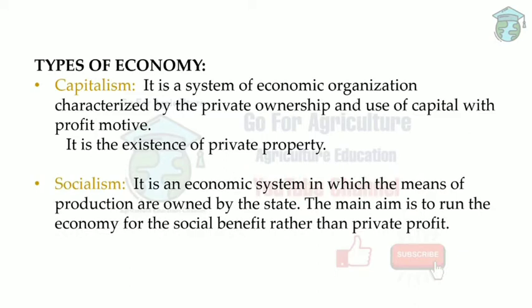Socialism means it is for the economic growth of the country. For example, many buildings and lands are owned by the government, and the government builds houses for the people to promote economic growth — many means of production are owned by the state. The main aim of socialism is to increase the economy of the country. Capitalism is for private profit, whereas socialism is for social benefit.